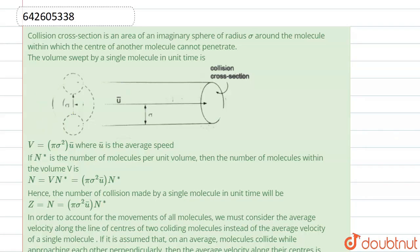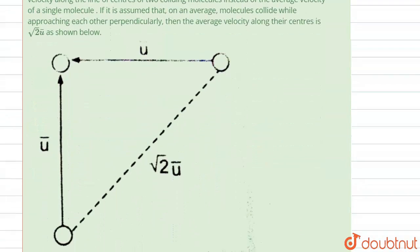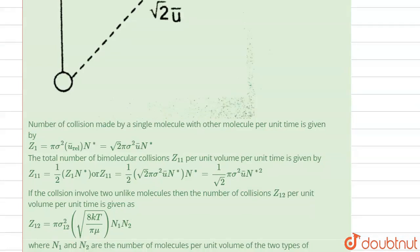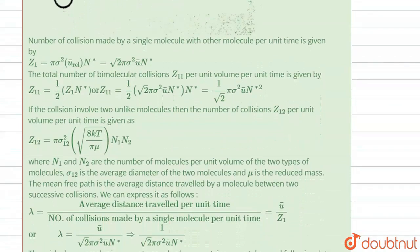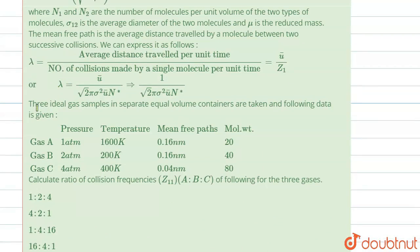We have collision theory given here and we have few values like average speed and lots of theories given. But our actual question starts from here. The actual question is saying that three ideal gas samples in separate equal volume containers are taken and following data is given.